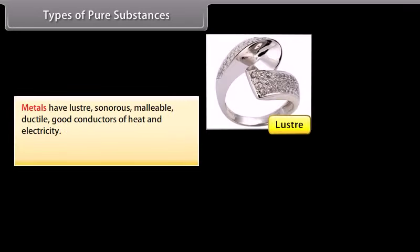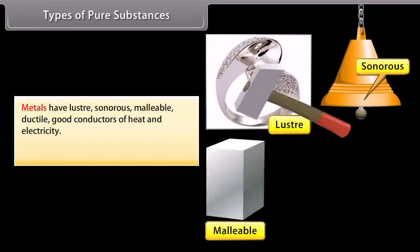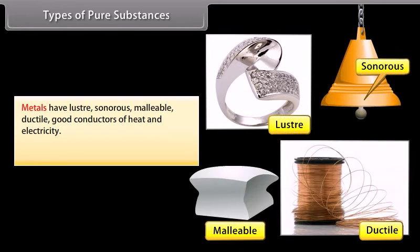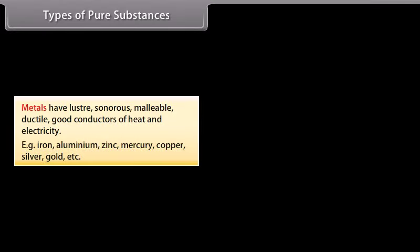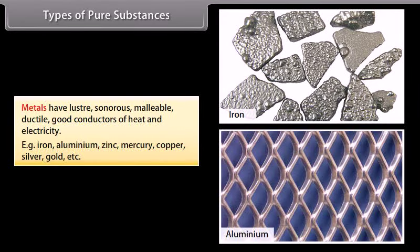Metals have lustre, are sonorous, malleable, ductile, and good conductors of heat and electricity. Examples include iron, aluminum, zinc, mercury, copper, silver, and gold.